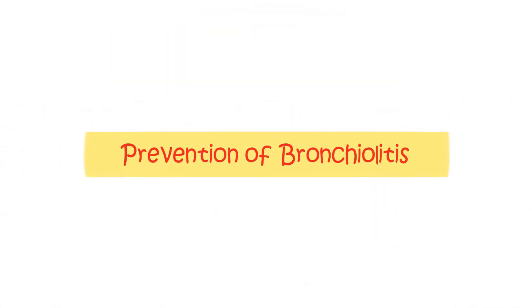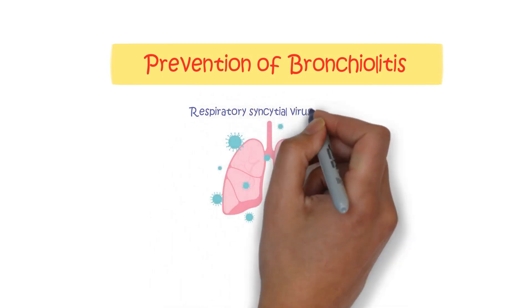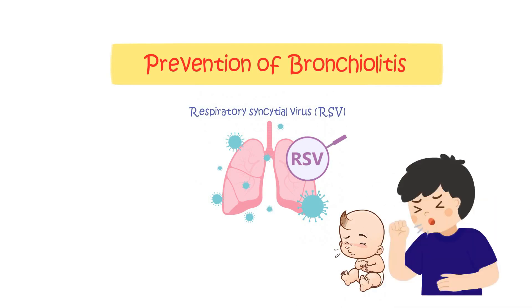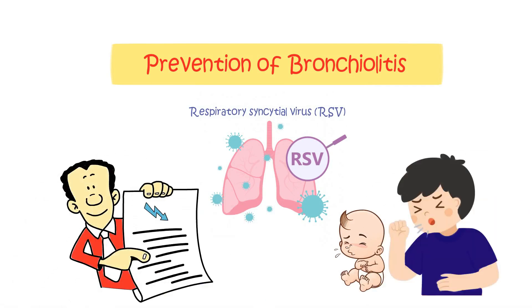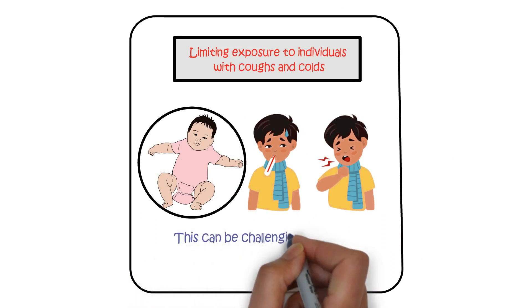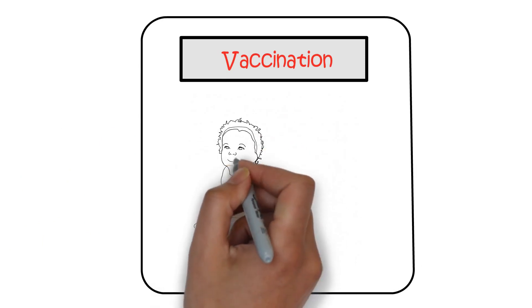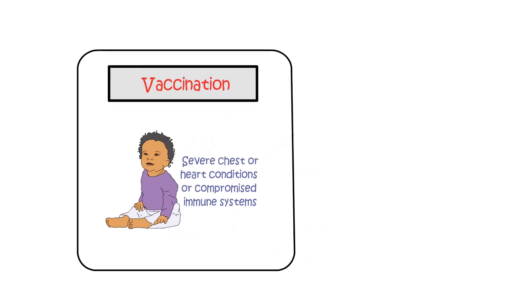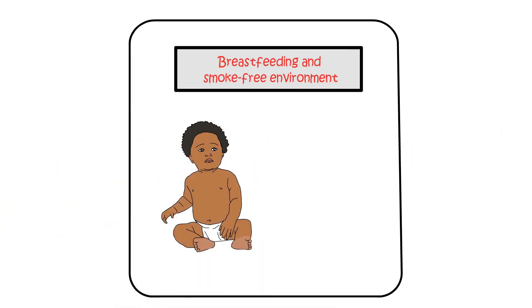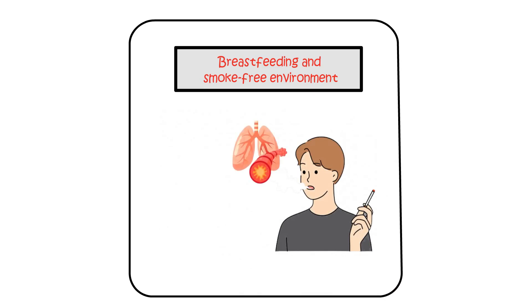In general, it is not usually possible to completely prevent bronchiolitis, particularly since RSV is responsible for many coughs and colds in both children and adults. However, there are some measures that can potentially reduce the risk or severity of the illness. Limiting exposure to individuals with coughs and colds may be advisable, keeping young babies away from people with respiratory infections. There is a vaccine available for RSV, but it is typically administered only to babies with severe chest or heart conditions or compromised immune systems. Babies who have been breastfed and those living in a smoke-free home generally experience milder cases, as passive smoking can compromise the lining of the airways, making them more susceptible to infections.